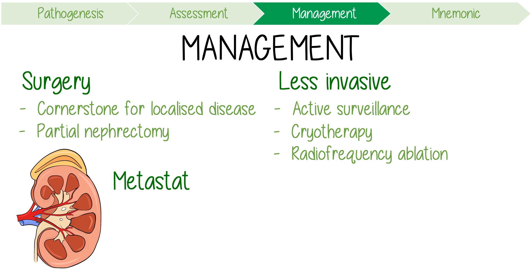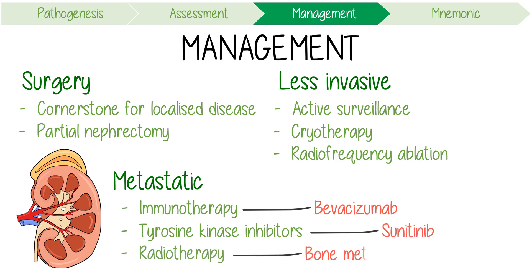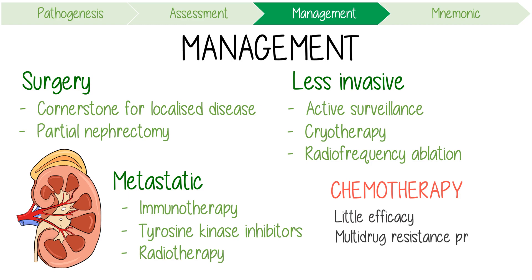Therapeutic options for metastatic carcinoma include immunotherapy using bevacizumab and interferon-alpha, and tyrosine kinase inhibitors like sunitinib, and radiotherapy which has a role in treating bone or brain metastases. Interestingly, chemotherapy has shown little efficacy in metastatic renal cell carcinoma, probably due to the expression of multidrug-resistant protein 1 by tumour cells.